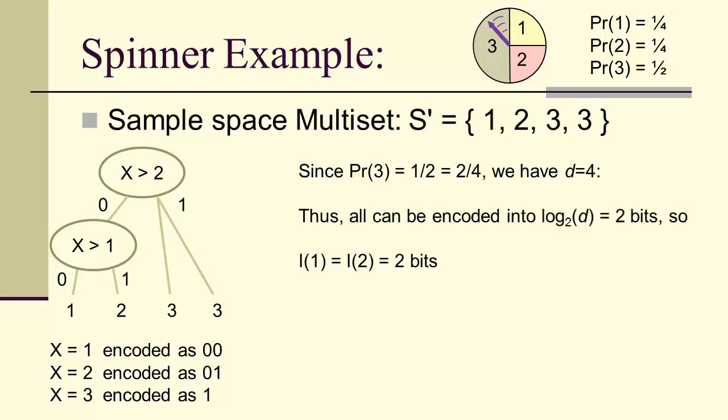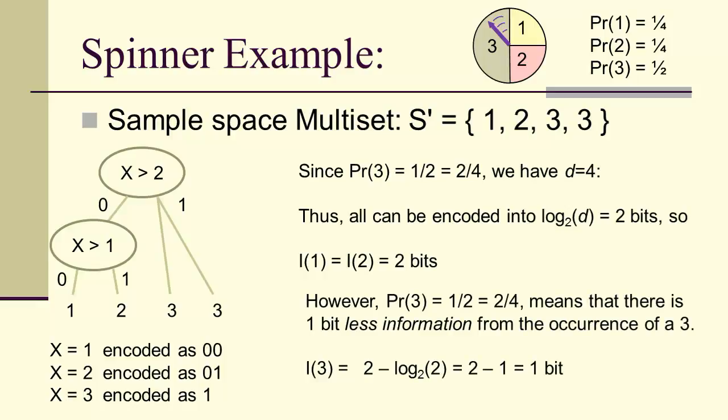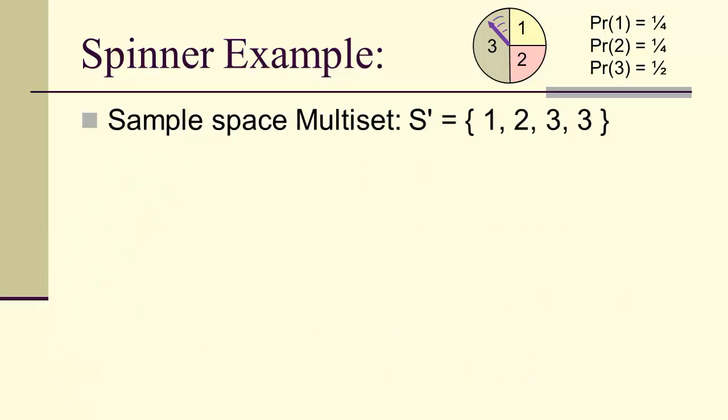Since the probability of three is two-fourths, we're looking at d equals four, where d is the number of things in the multi-set. All can be encoded into log base two of d, which is two bits. So the information for one and two is two bits. But the probability of three is a half, which means there's one bit less information from the occurrence of a three. In other words, we can get three in two different ways. And therefore, because of the identity, or the two different outcomes being identical, we only have one bit of information when three actually occurs.